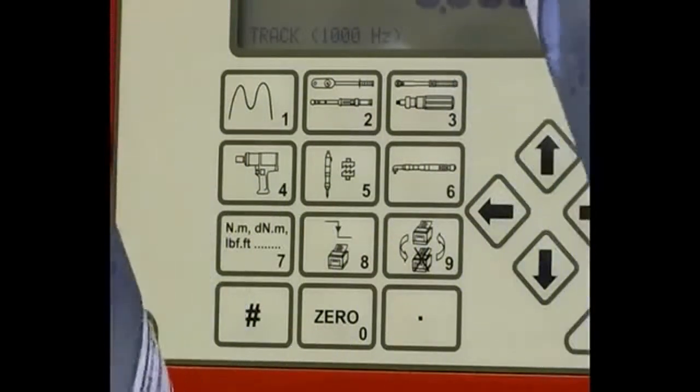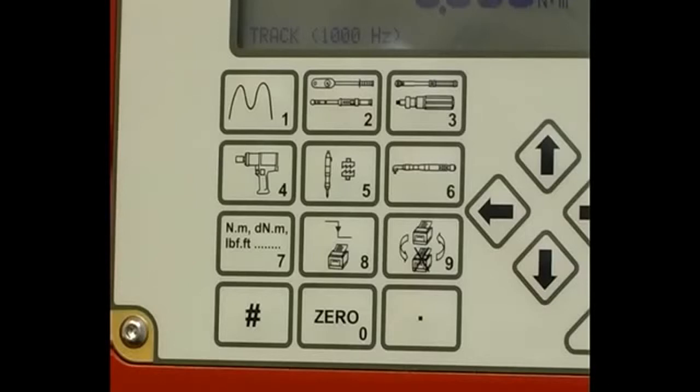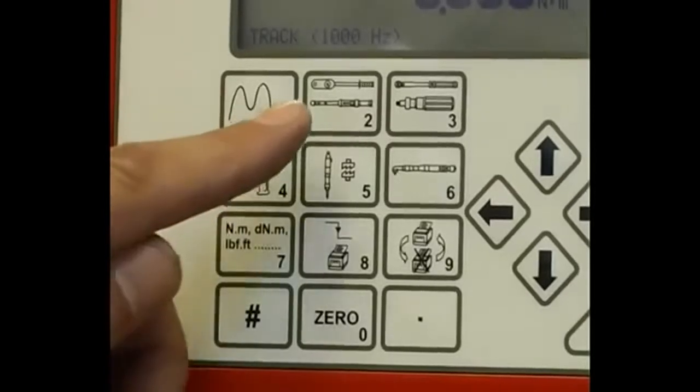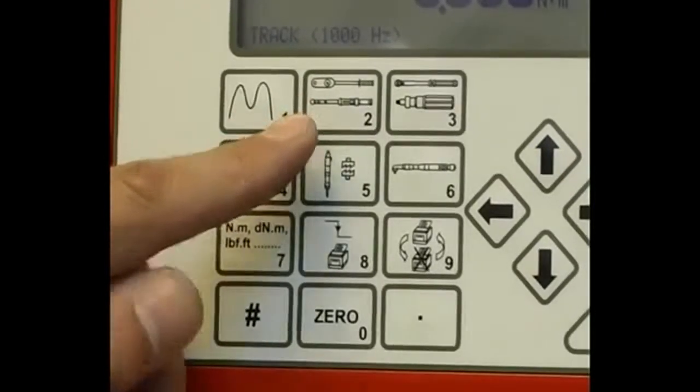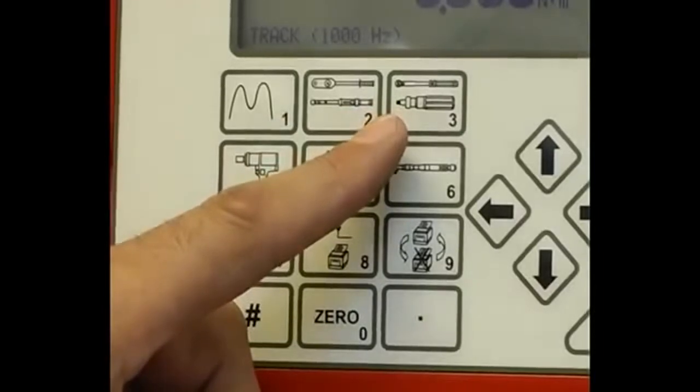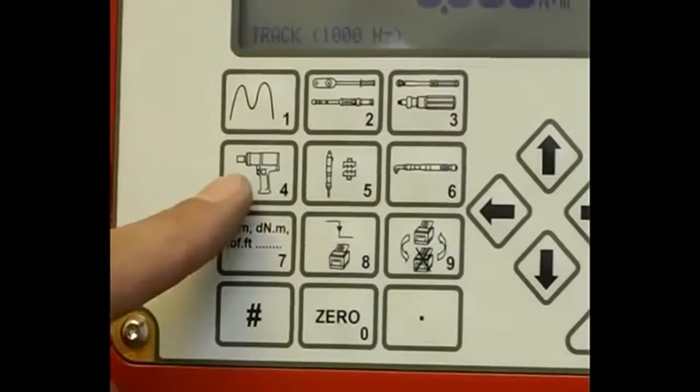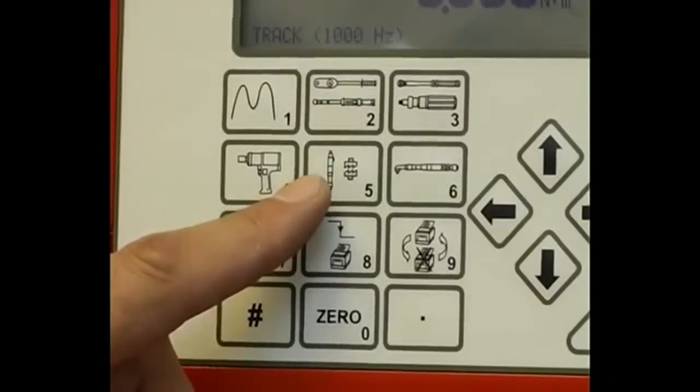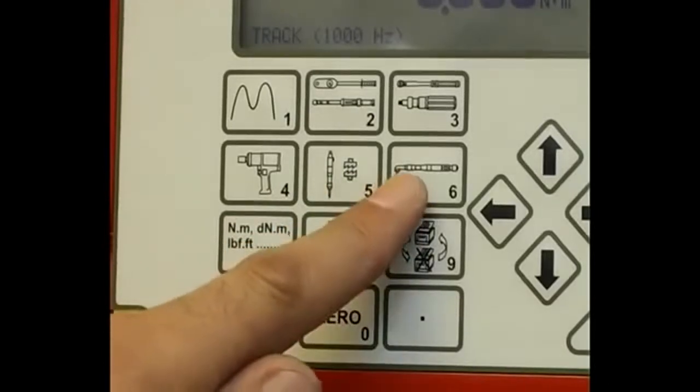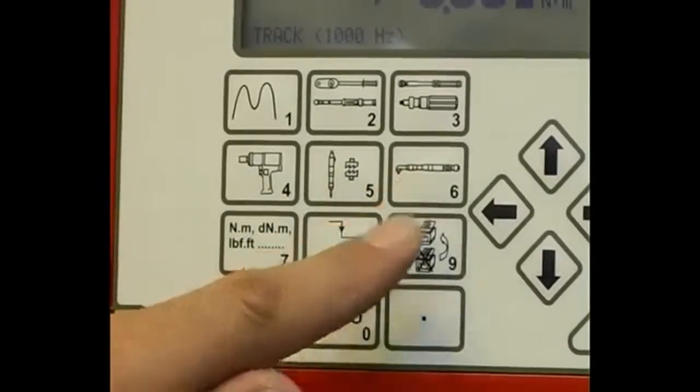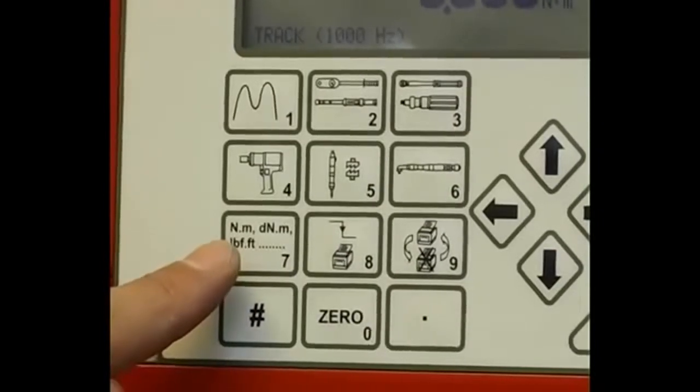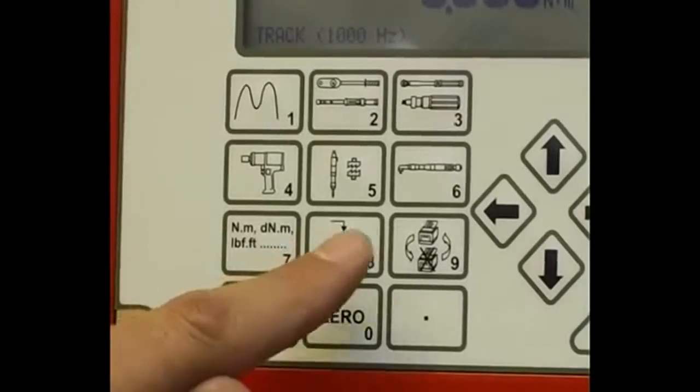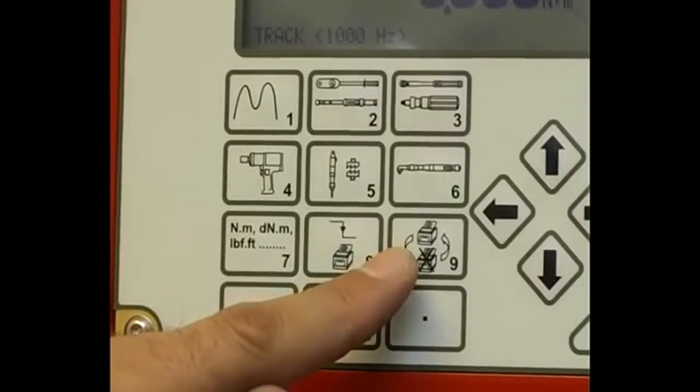The TTT Torque Tool Tester tutorial display buttons select the following functions: 1. Track Mode, 2. Dial and Electronic, 3. Click and Cam, 4. Impulse Tools, 5. Clutch Tools, 6. Stall Tools, 7. Unit of measurement selection, 8. Memory reset and send result via the RS232 output, 9. Print Inhibit.